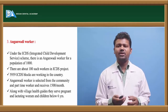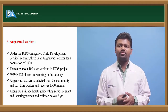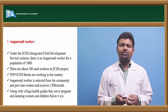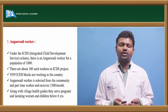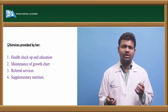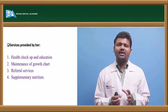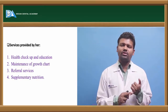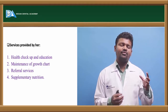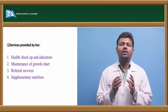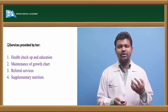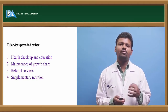The Anganwadi workers are part of the Integrated Child Development Scheme. There are 5,959 ICDS blocks working today. Anganwadi workers are selected from the community as part-time workers and receive 1,500 rupees per month. The services they provide include health checkup, education, maintenance of growth charts, referral services, and supplementary nutrition — they encourage a nutritional diet.